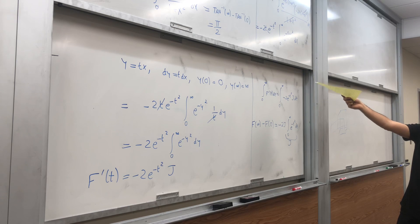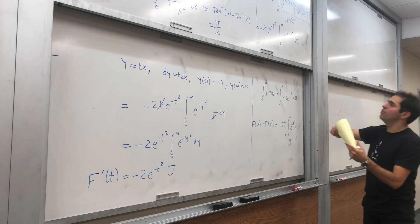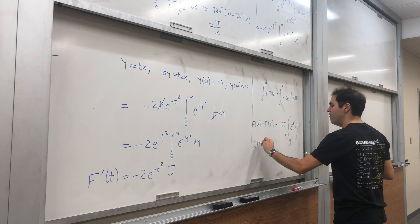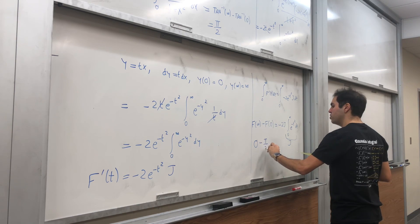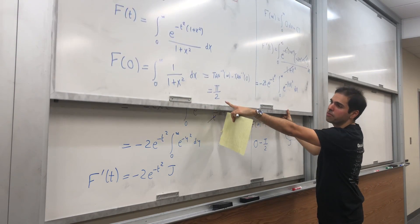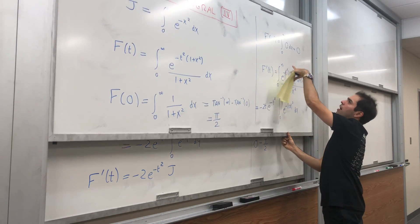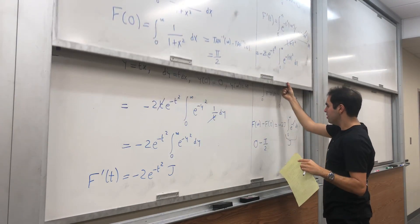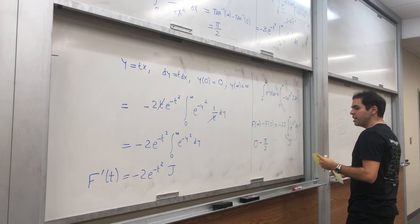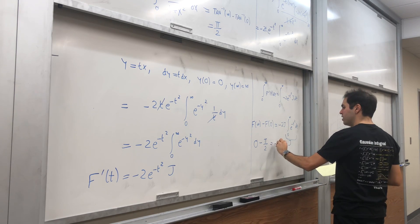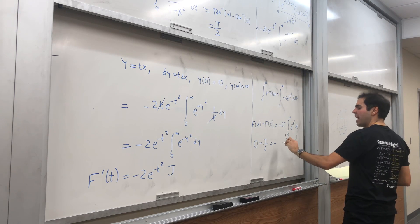So what do we have? So f of infinity was just zero. f of zero was pi over two. Again, by those calculations here, pi over two and then zero.